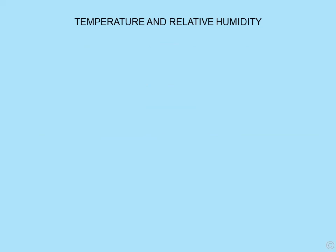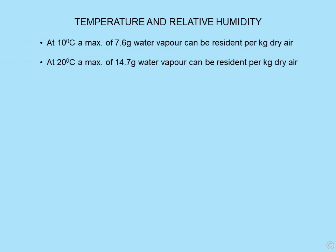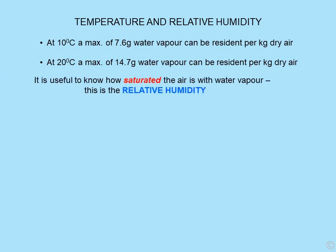Let's first look at temperature and relative humidity. At 10 degrees, seven and a half grams of water vapor can be resident per kilogram of dry air. At 20 degrees — double the temperature — 14.7 grams of water vapor can be resident per kilogram of dry air. So the warmer the air, the more water vapor it can retain. It's very useful to know how saturated the air is with water vapor, and this measure of saturation is known as the relative humidity.